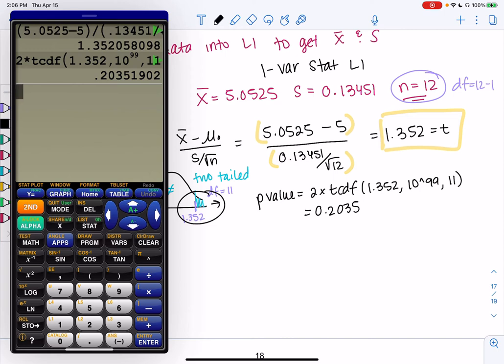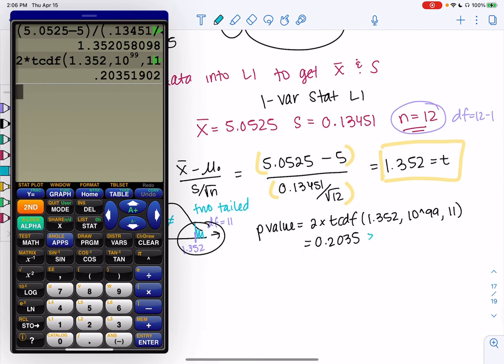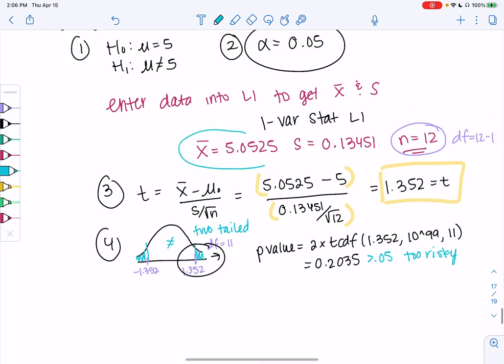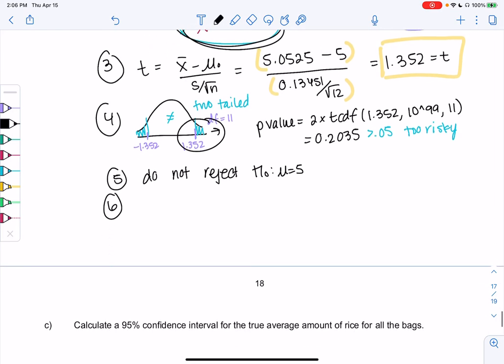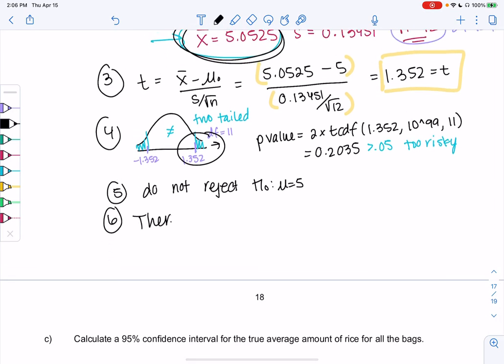So this is too risky. We were only willing to take 5% risk, and this is beyond that. So too risky. It could just happen randomly, which means it doesn't disprove that it's incorrect. So our sample was only slightly above 5 pounds, and so maybe it was just random. So it's too risky. We do not reject. We do not reject H0, which is the mean equals 5. It's possible the average is still 5, because this wasn't that far off. There's not enough evidence at 5% to show the filling machine is filling incorrectly. There is not enough evidence at 5% to show the filling machine is incorrect on average.